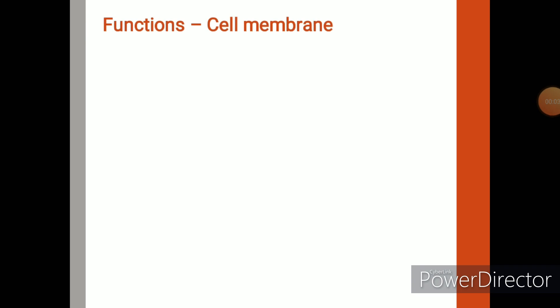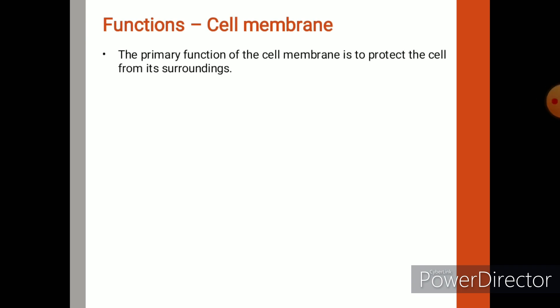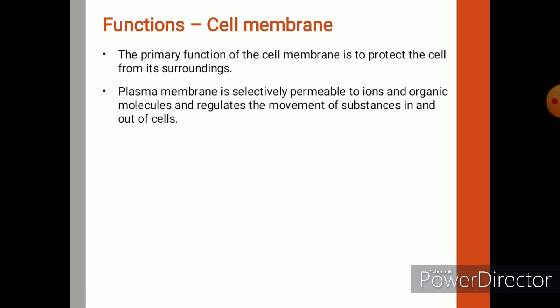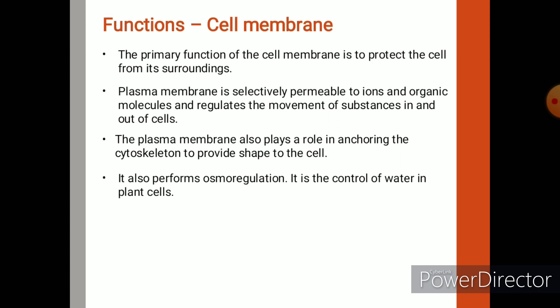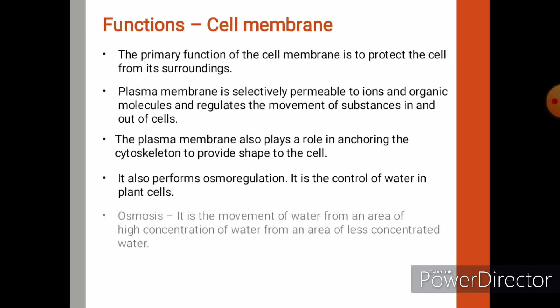Let us see the functions of the cell membrane. The main function of the cell membrane is to protect the cell from its surroundings. It is selectively permeable, meaning it allows only a few substances into the cell. It also plays a vital role in providing shape to the cell. And it performs osmoregulation — osmosis means movement of water from higher concentration to lower concentration.